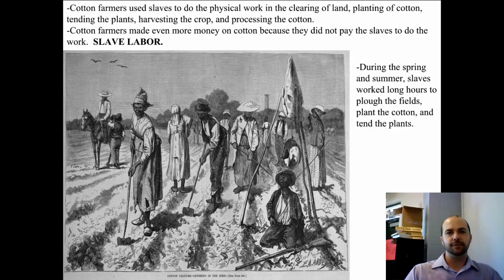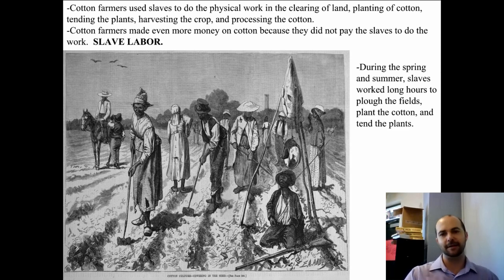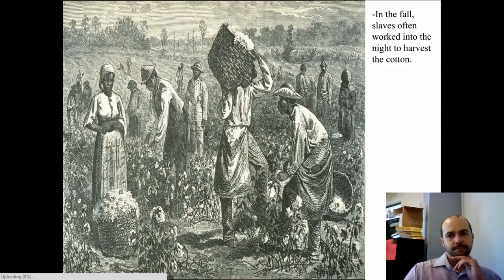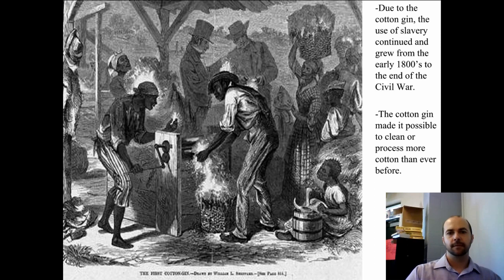Cotton farmers used slaves to do the physical work. During the spring and summer, slaves worked long hours to plow the fields, plant the cotton, and tend the crops — we're talking 14, 16, 18-hour days.